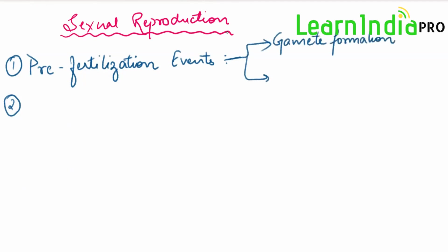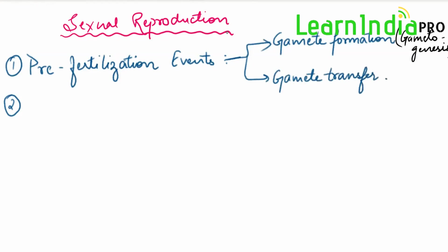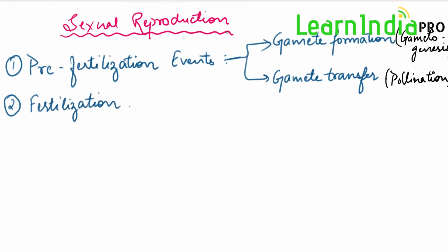Gamete formation is called gametogenesis — 'genesis' means formation, 'gameto' means gamete, so it is the formation of gametes. The second step involves gamete transfer. Here, since the male and female gametes are immotile, the male gamete must be transferred to the female gamete. This process in flowering plants is called pollination. The second major event is fertilization, where the fusion of the male and female gametes takes place.